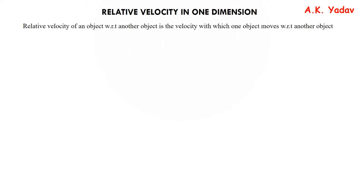Let us start our concept: relative velocity in one dimension. The relative velocity of an object with respect to another object is the velocity with which one object moves with respect to another object. There are two cases: one in which both objects are moving in the same direction, and the other in which they are moving in opposite directions.